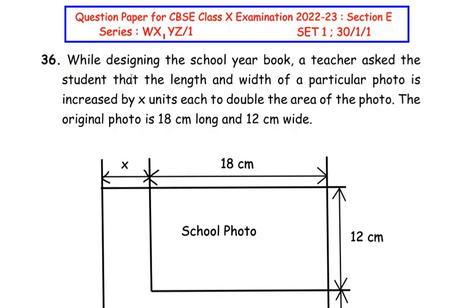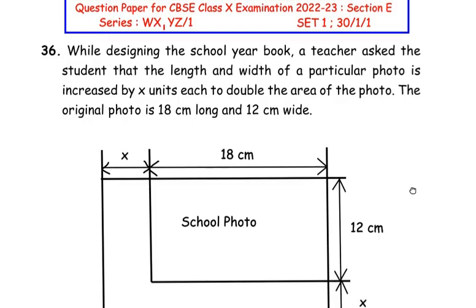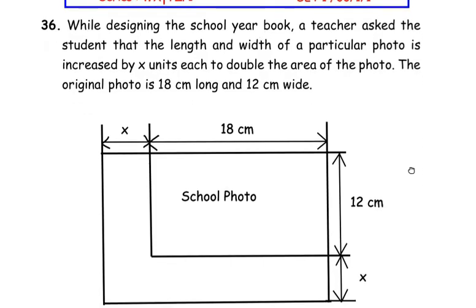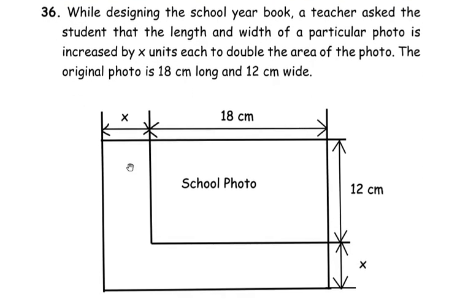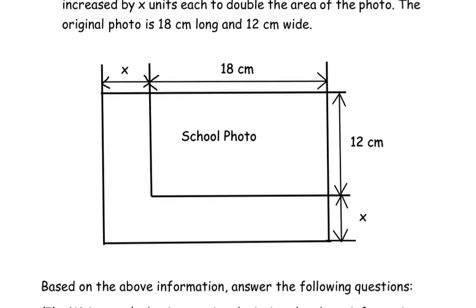The 36th question is from the quadratic equations chapter. While designing the school yearbook, a teacher asked the student that the length and width of a particular photo is increased by x units each to double the area of the photo. The original photo is 18cm long and 12cm wide. Based on the above information answer the following questions.